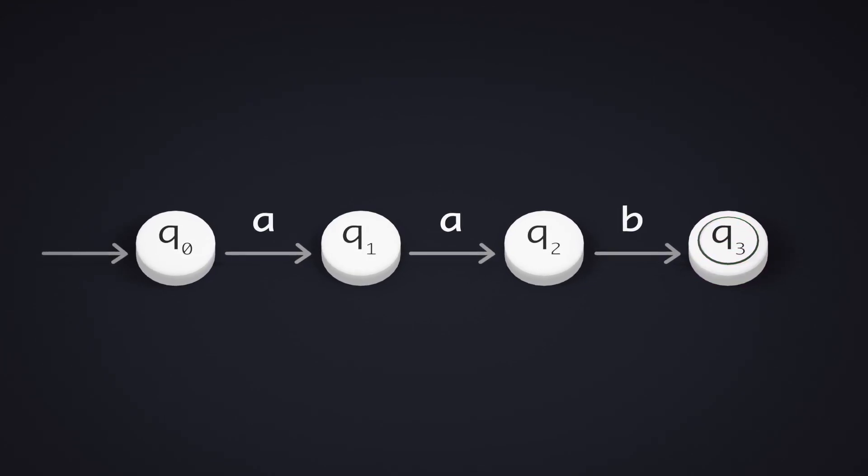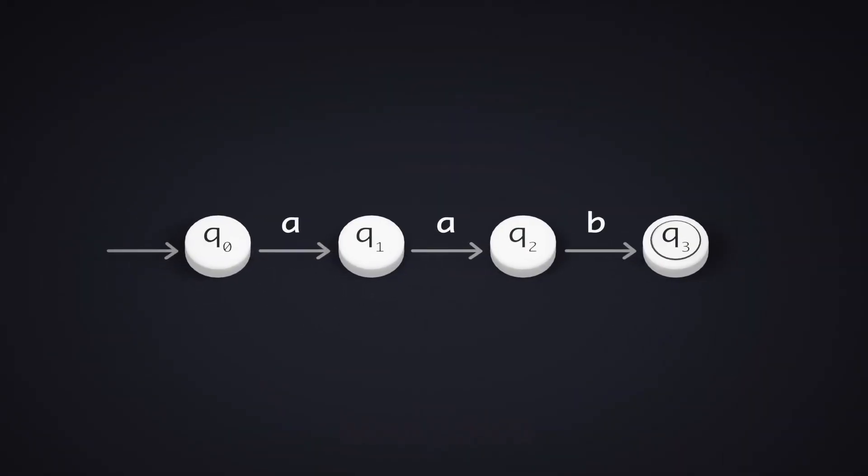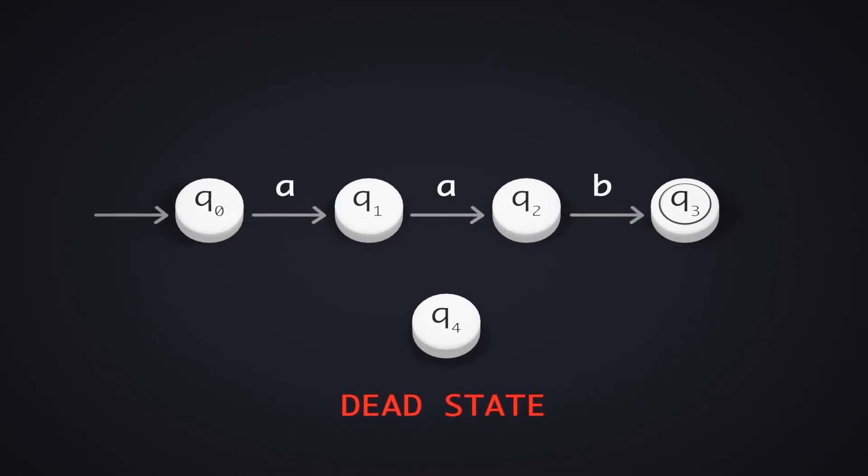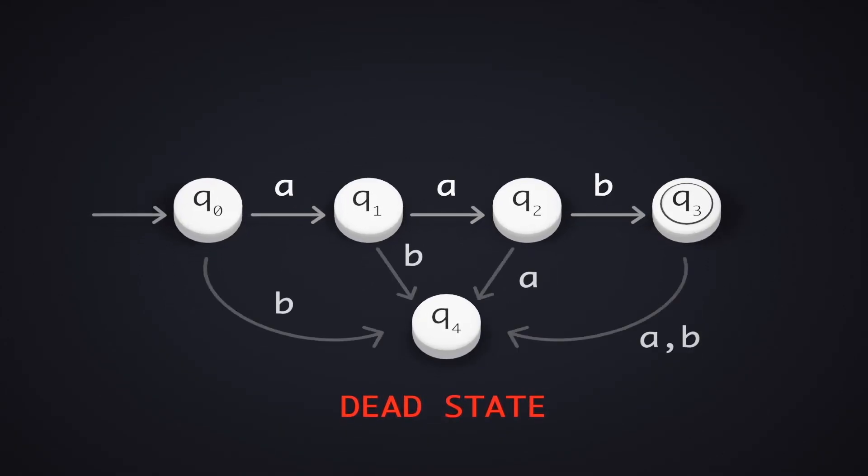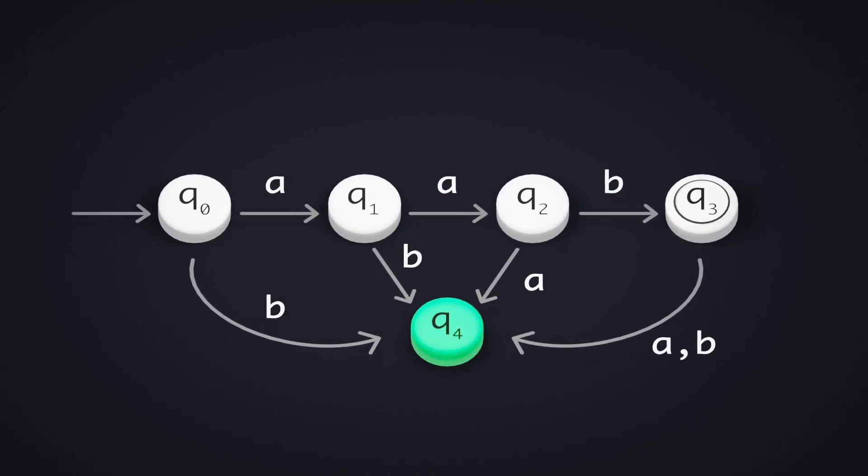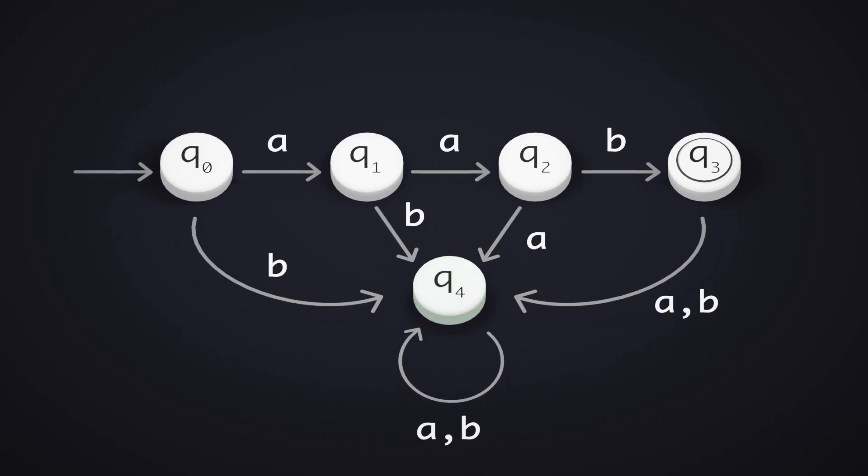The final thing to do is to reject all other strings in this DFA. Hence, we create a new dead state Q4, responsible to handle just that. We create appropriate transitions to lead to that dead state. Also, no matter what symbol occurs at the state Q4, be it A or B, we will always still end up at that same dead state.